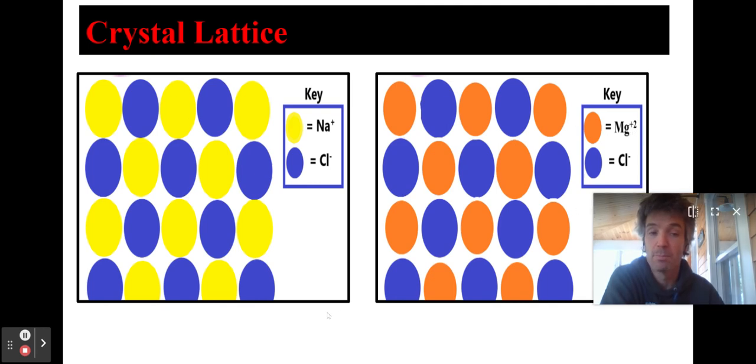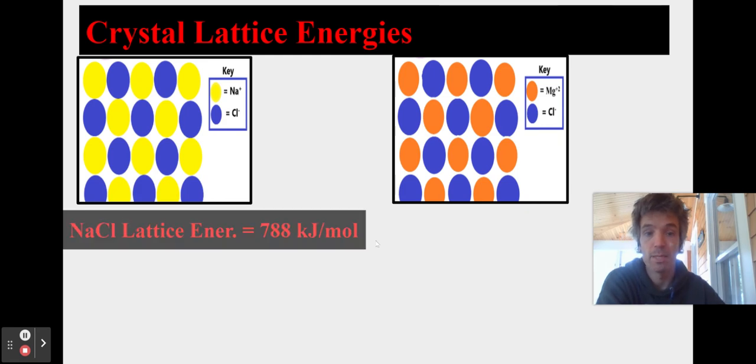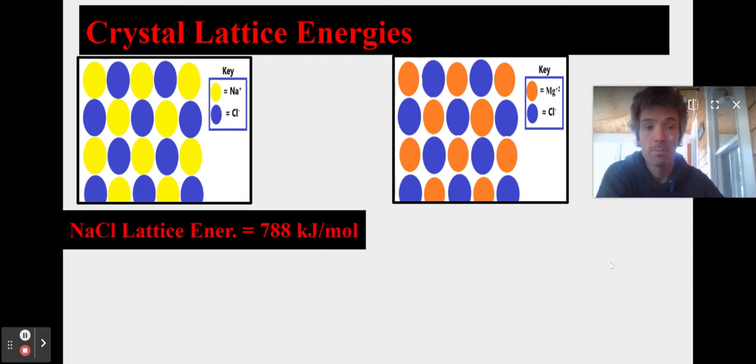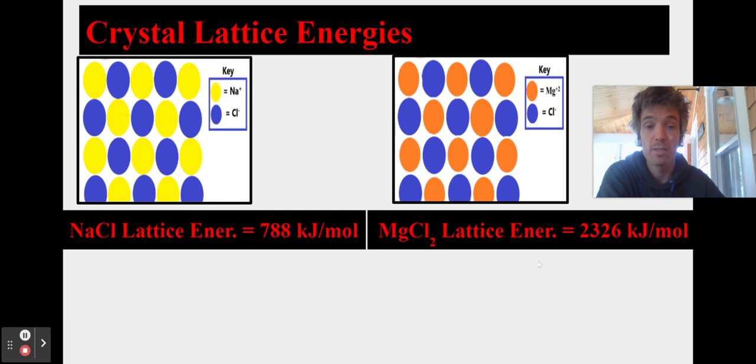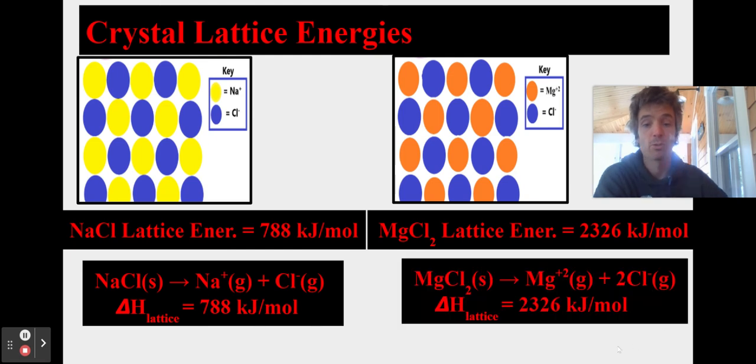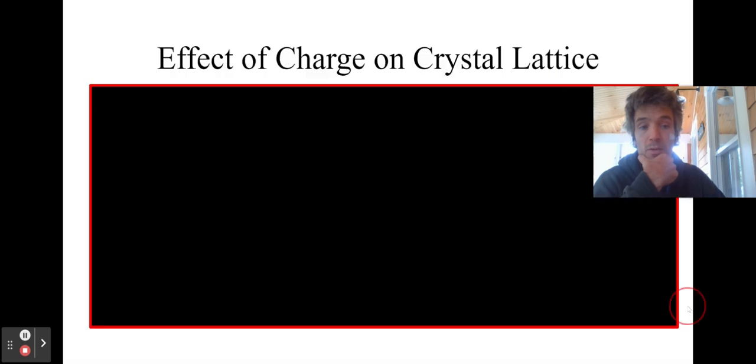Therefore, you'd expect the lattice energy to be a lot greater over here than over there. Because the bigger the charge, the more the attraction. Let's see if it plays out. As you can see, magnesium's is much, much higher. All right. It's almost triple the lattice energy.